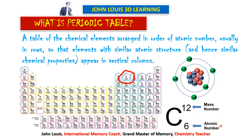So to summarize: atomic number is the number of protons and number of electrons. Mass number is the sum of protons and neutrons present in the nucleus. Atomic weight is the sum of the mass of protons and neutrons present in the nucleus.